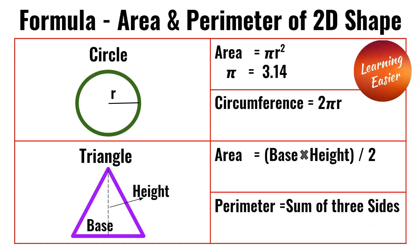For the triangle, the area is (base times height) divided by 2. And for the perimeter, it's the sum of all three sides.